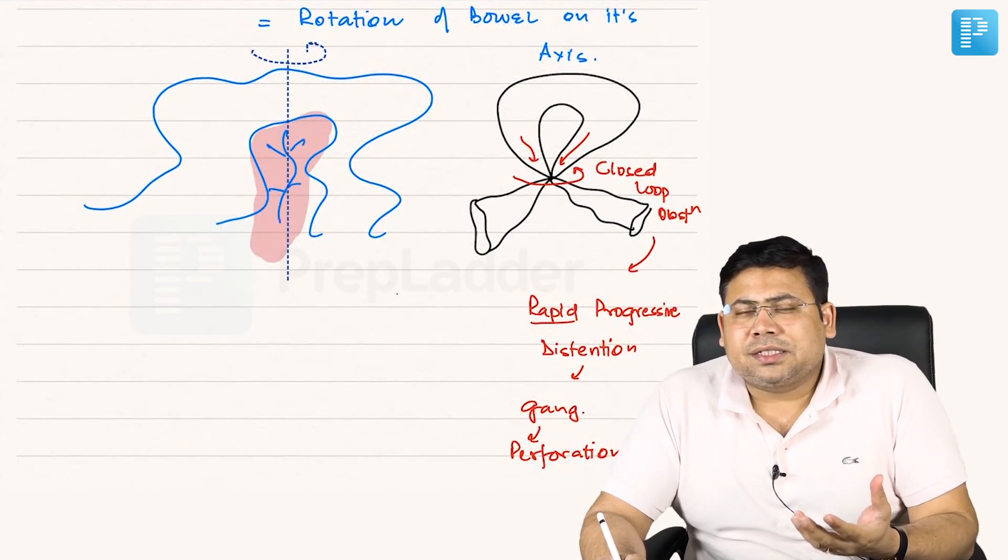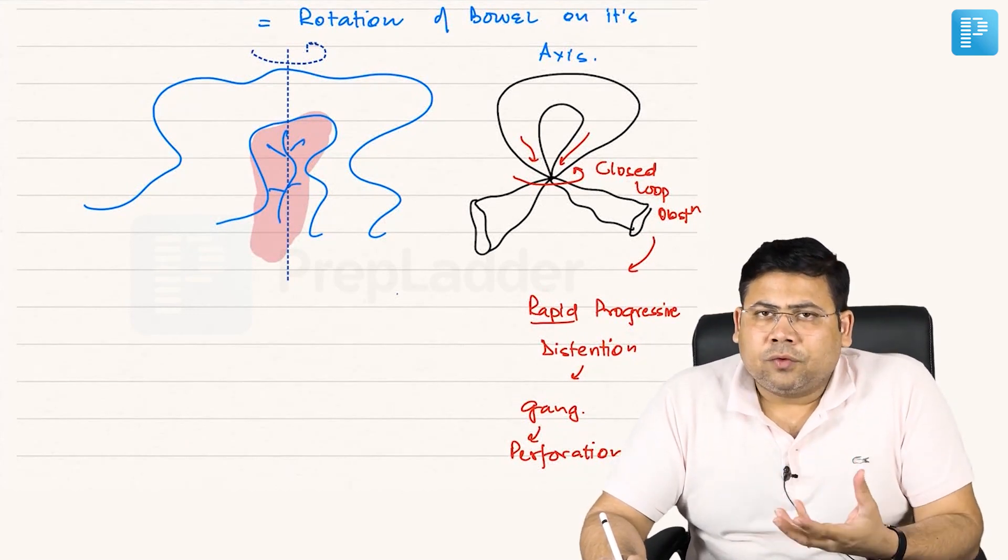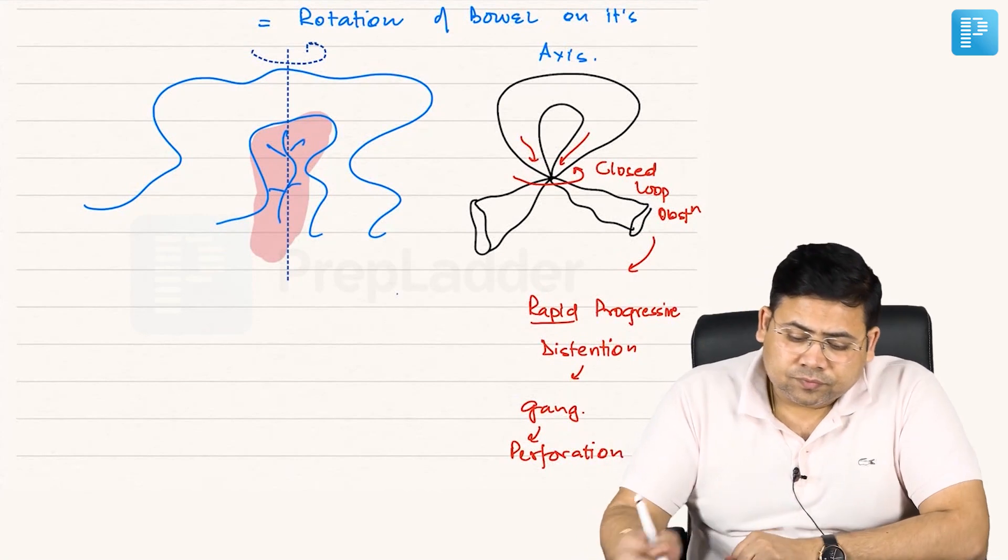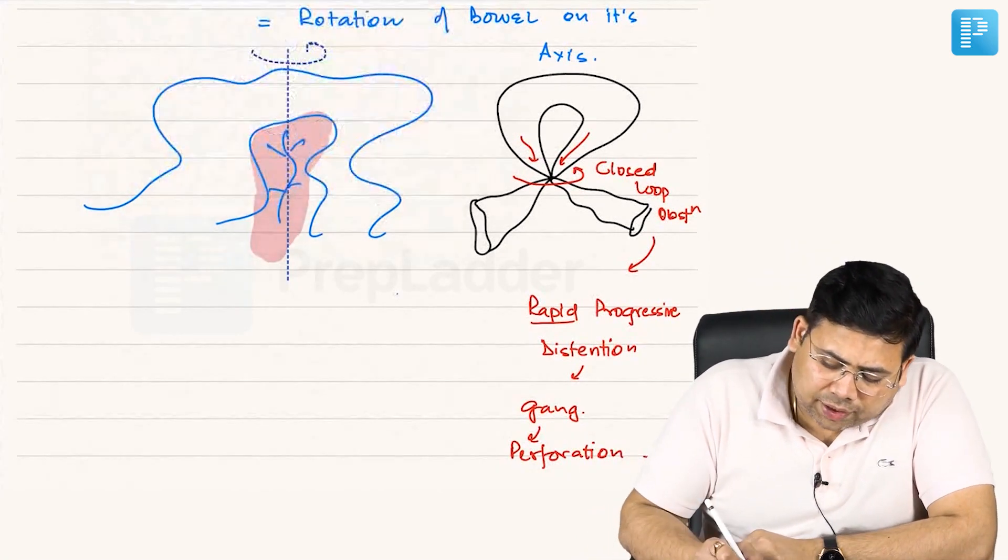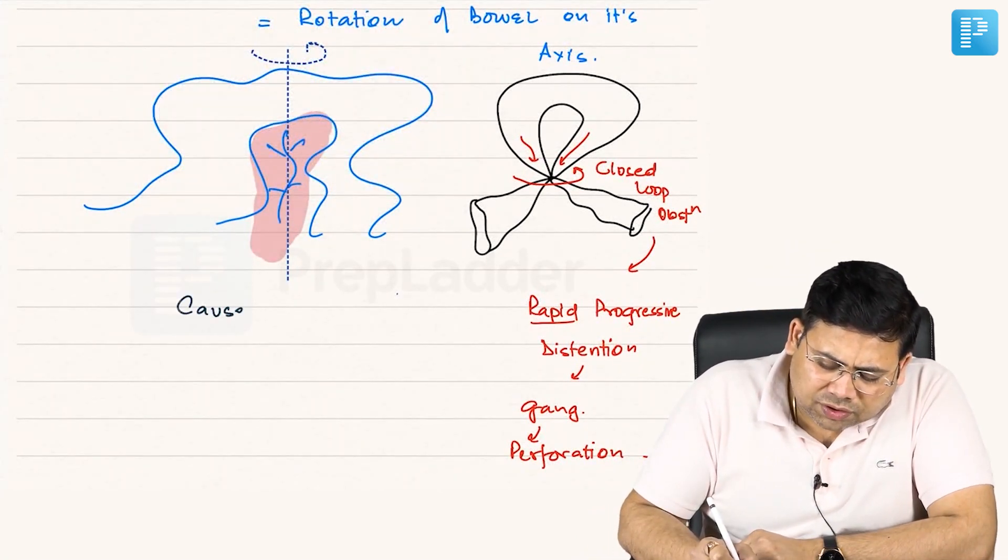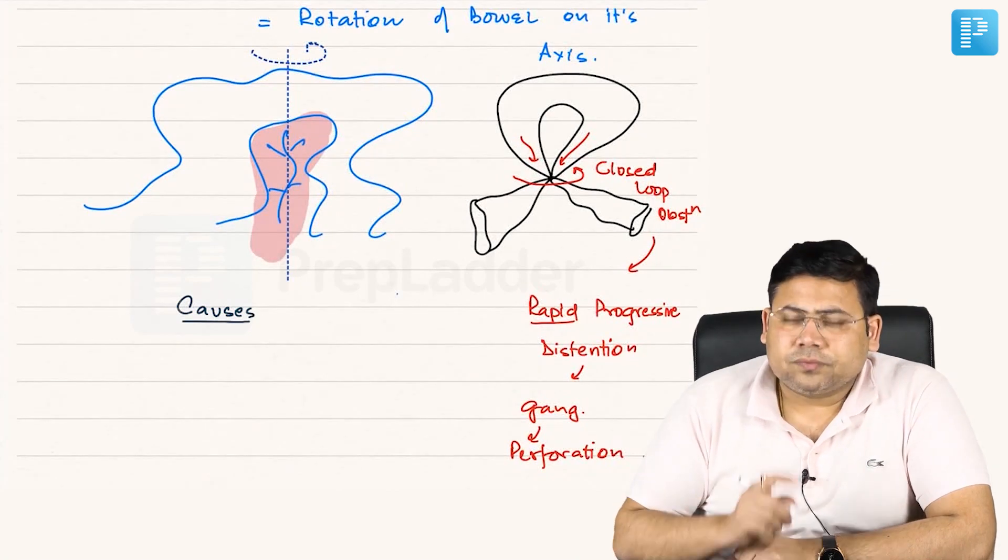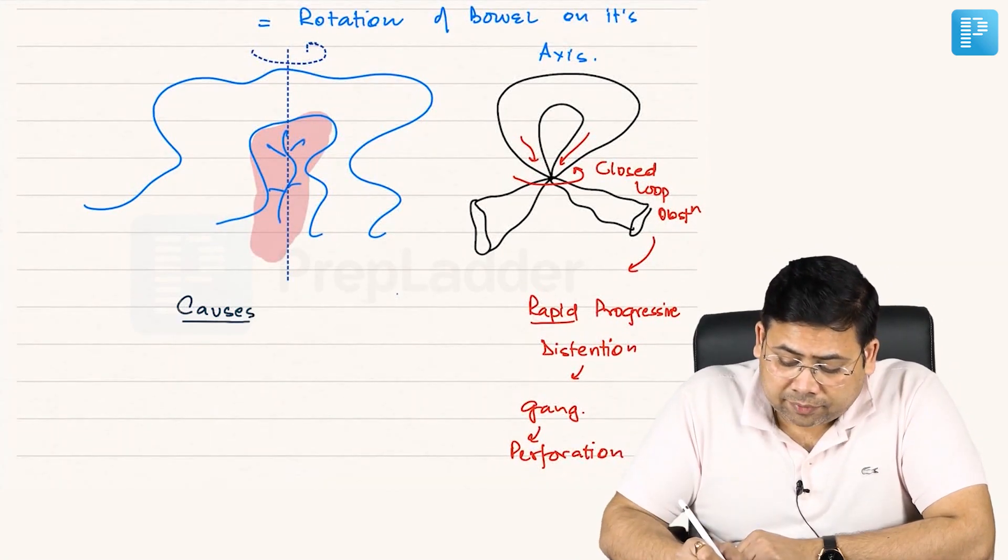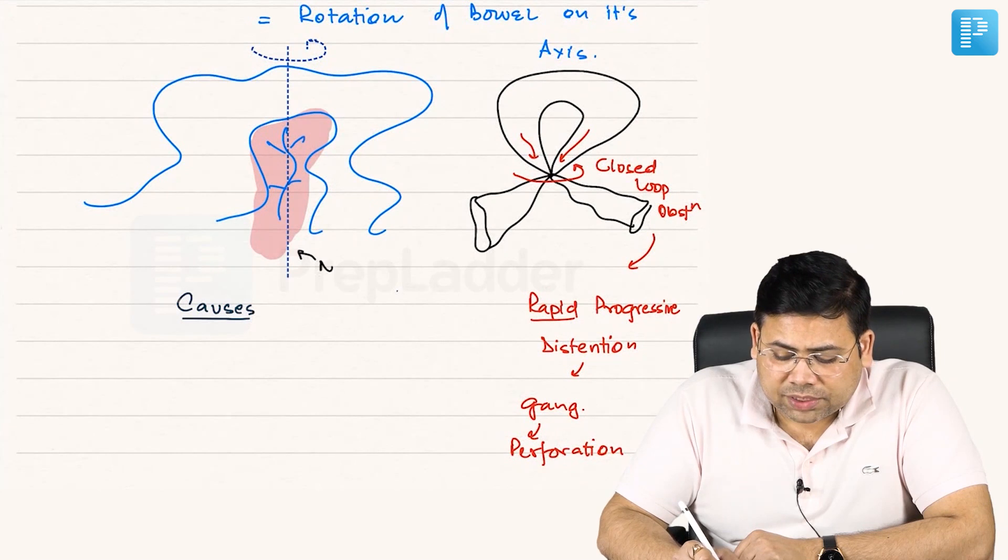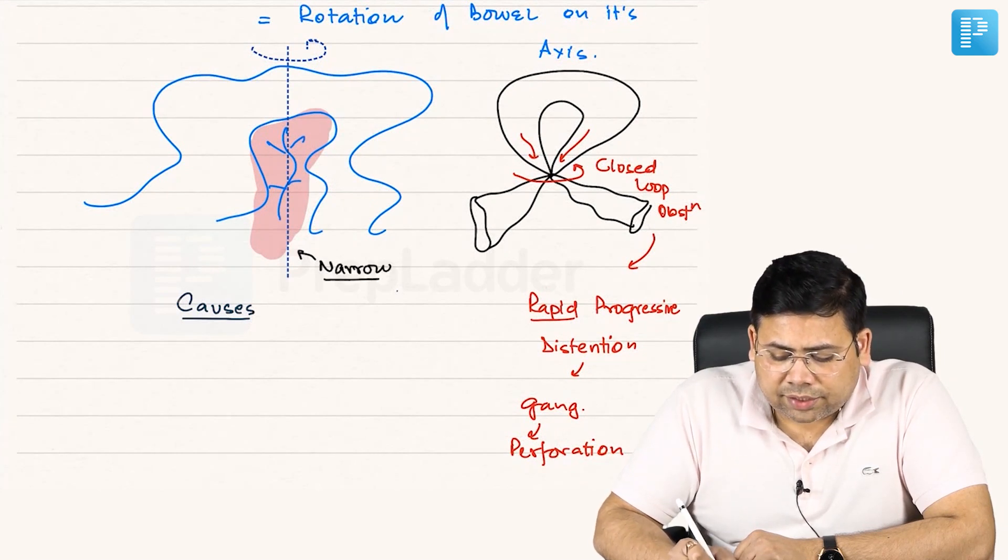What could be the reasons behind this volvulus formation? What could be the causes behind the volvulus? If you talk about the simple causes, I can draw them in the diagram. This is a narrow mesentery. A narrow mesentery is very important.